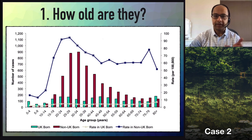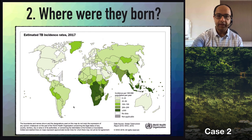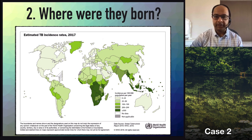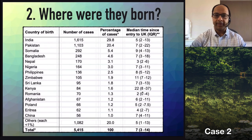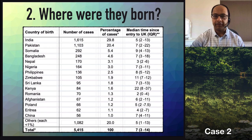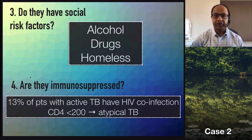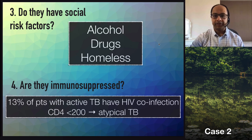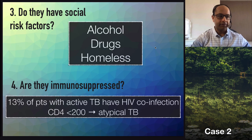In Leicester, 2011 census data showed a third of residents were born outside the UK, 80% of those arrived under age 35, and 80% who develop TB do so within the first 10 years of arriving. Looking at where patients come from globally, the WHO data shows the highest incidence in sub-Saharan Africa, parts of Asia, and the Pacific. Social risk factors such as alcohol and drug misuse, homelessness, and immunosuppression — particularly HIV co-infection — also increase risk. Thirteen percent of patients with active TB are co-infected with HIV.